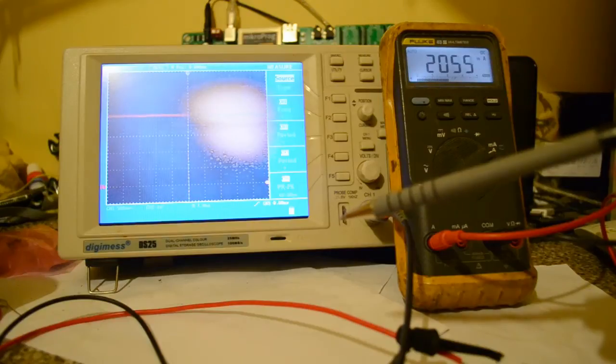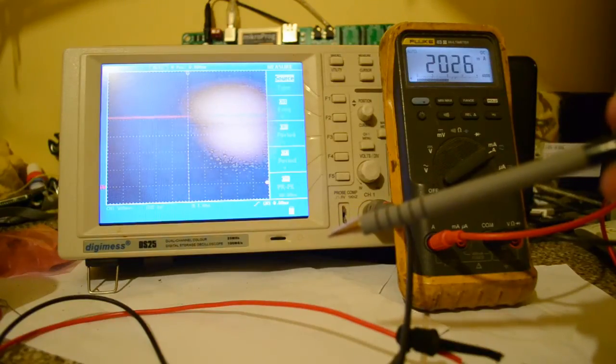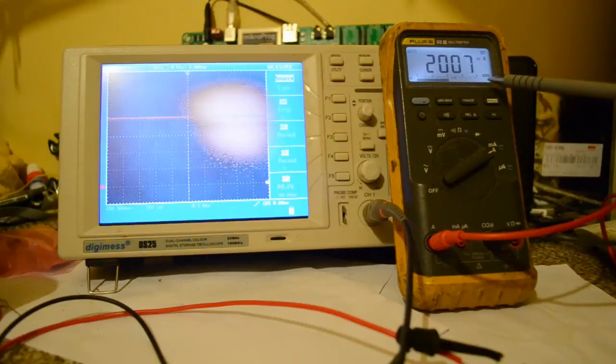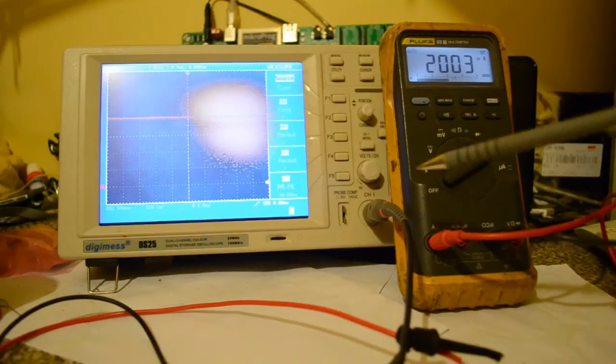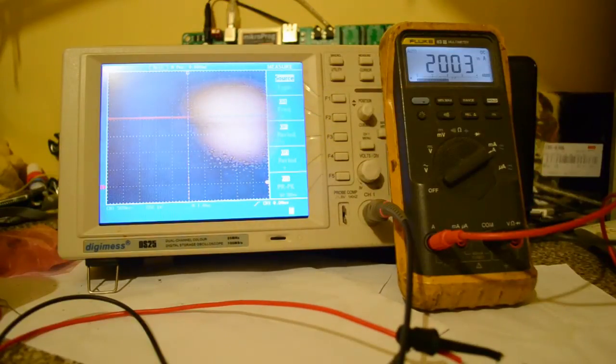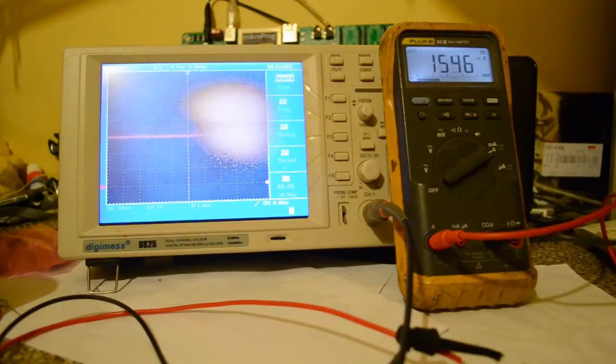1,500 milliamps. So we've got one and a half squares. And now this is the limit of the power supply, just over. I was at 2.07 amps. So whack it back down to roughly there, 2000 milliamps. We've got one, two, three, four, two volts. So pretty accurate. I like it.